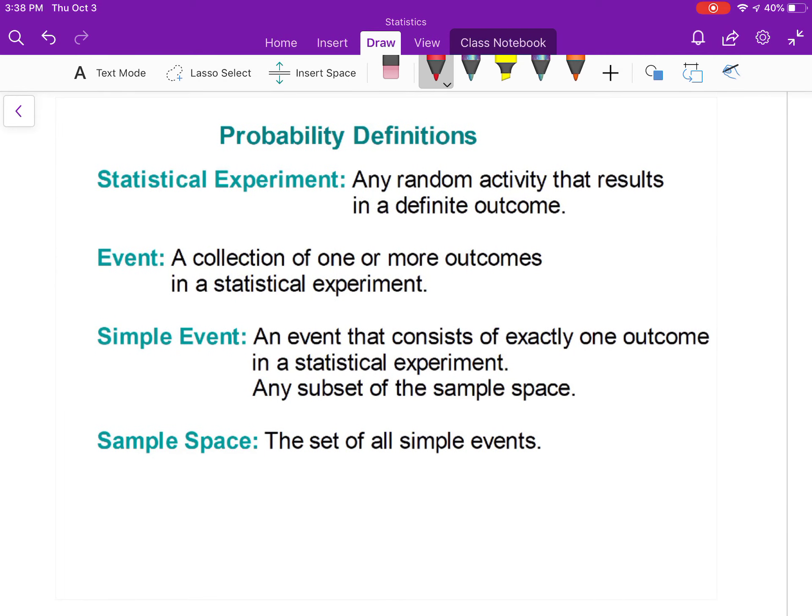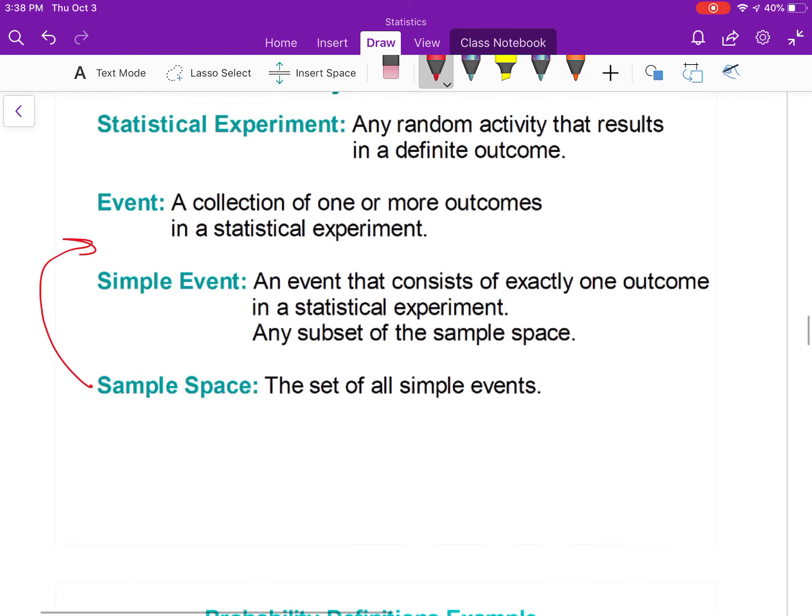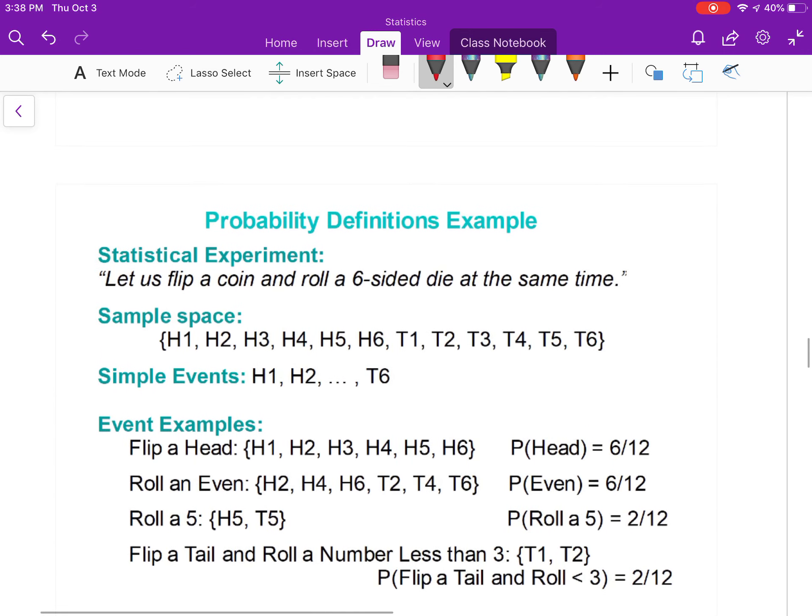Just some definitions: statistical experiment is any random activity that results in a definite outcome. An event is a collection of one or more outcomes in a statistical experiment. A statistical simple event is an event that occurs as exactly one outcome in a statistical experiment, any subset of the sample space.